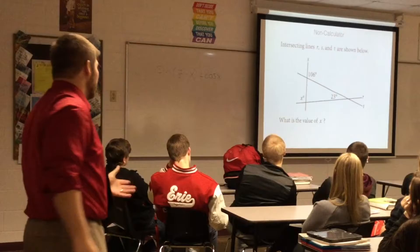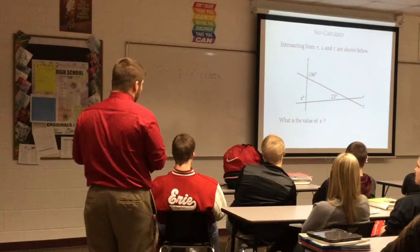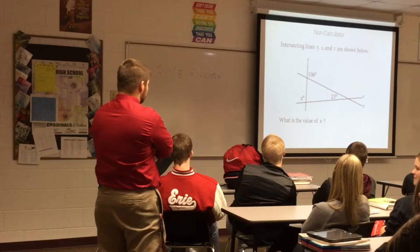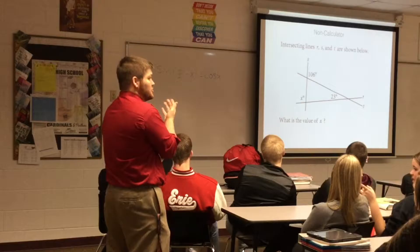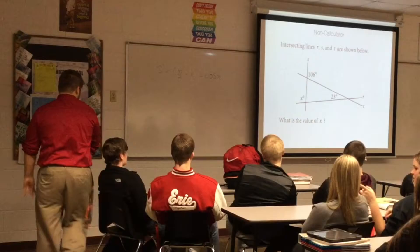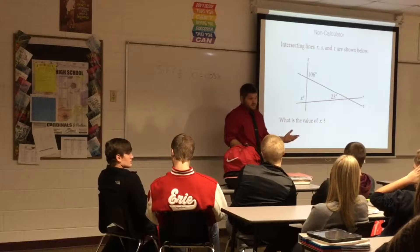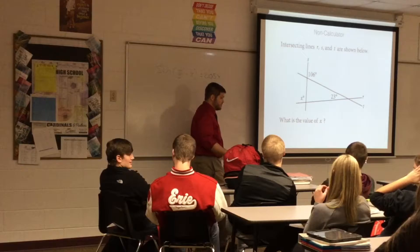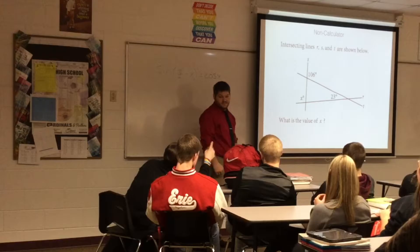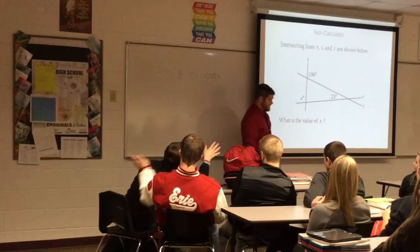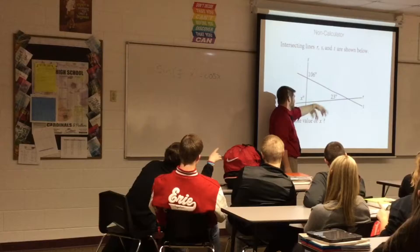Here's another non-calculator problem. A lot of you know how to solve it — you'd solve for one angle, which is 74 degrees, and then do 180 minus 74 minus 23 to figure out what the remaining angle is. You're actually able to do that by hand, so you might want to brush up on your arithmetic skills without a calculator. The answer is 97.